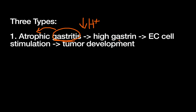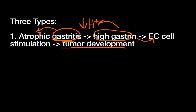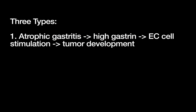We know that gastrin leads to acid secretion. So the stomach senses this low-acid state and secretes a great deal of gastrin to try to increase acid production. Unfortunately, a side effect of that high gastrin is stimulation of the EC cells themselves. If this stimulation happens for a prolonged period of time, you get overgrowth of those EC cells and development of gastric neuroendocrine tumors.